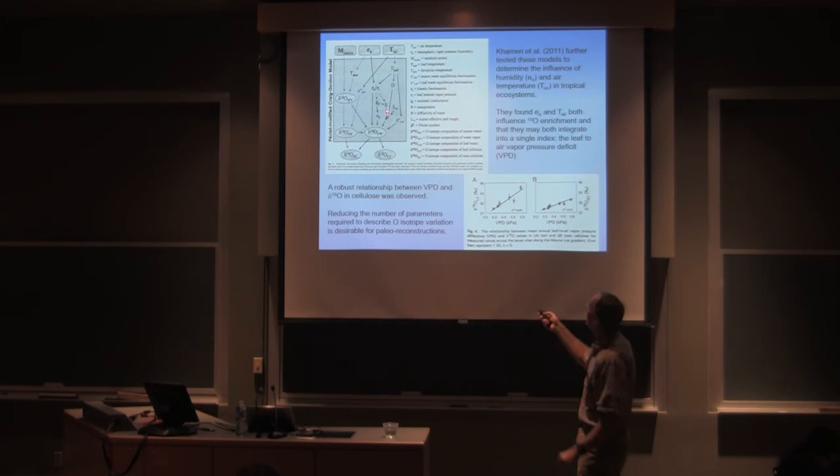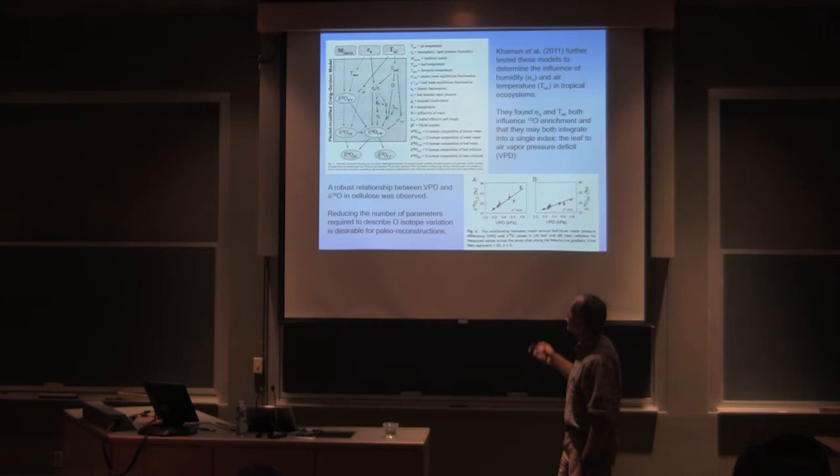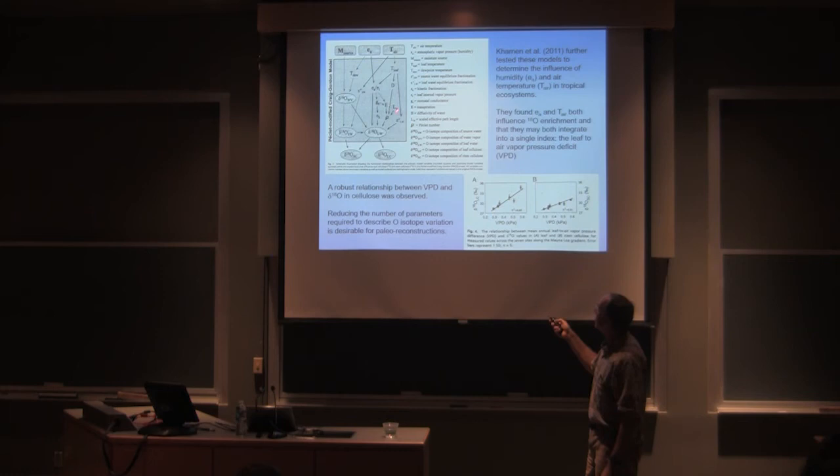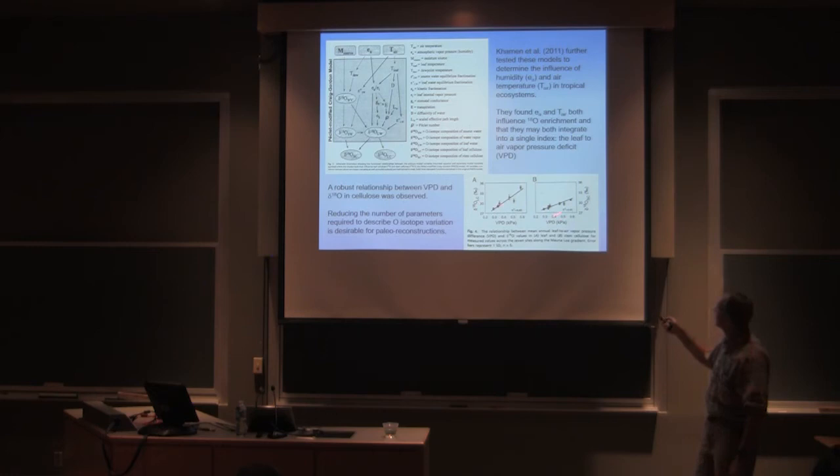And he's using the Peclet effect, but to be honest with you, there's a number of things that are not included. The effective path length isn't included. And so you have to know what that is. So there's more complicated. But this is sort of a simplifying thing. And what he's shown is that these leaf cellulose or stem cellulose is really dependent on vapor pressure deficit.